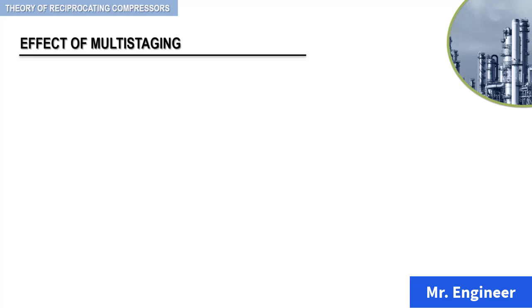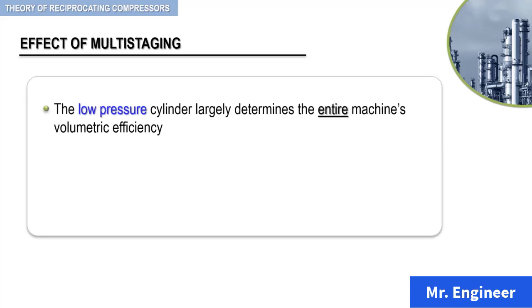Multi-staging has an important effect on volumetric efficiency. Here, the low-pressure cylinder largely determines the entire machine's volumetric efficiency. Why is that? Because whatever volume this cylinder delivers to succeeding stages must be discharged, with the exception of slight leakage that occurs through the packing.